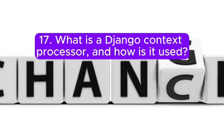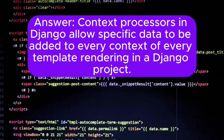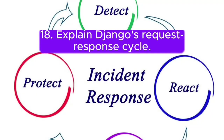Question 17: What is a Django context processor, and how is it used? Answer: Context processors in Django allow specific data to be added to every context of every template rendering in a Django project.